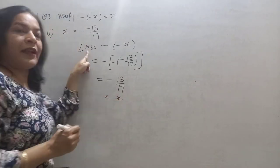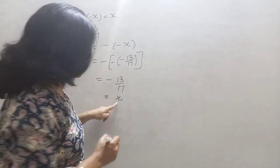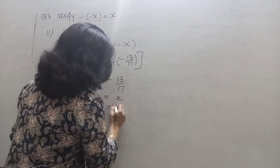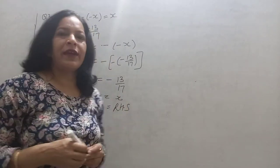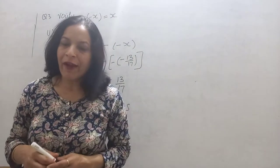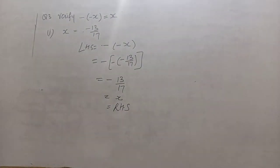And minus 13 upon 17 is the value of x. We started again from the left hand side and reached the right hand side. Hence verified.